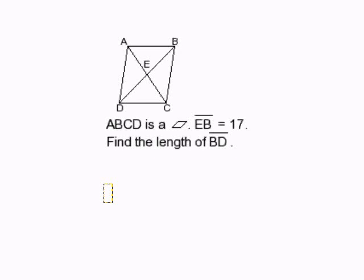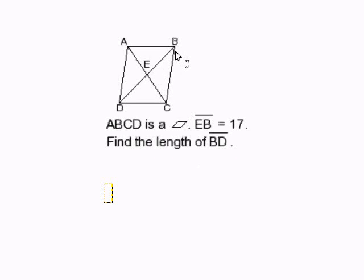In this problem we are given segment EB is 17. We can remember that this side should also be 17, because parallelogram diagonals bisect each other.